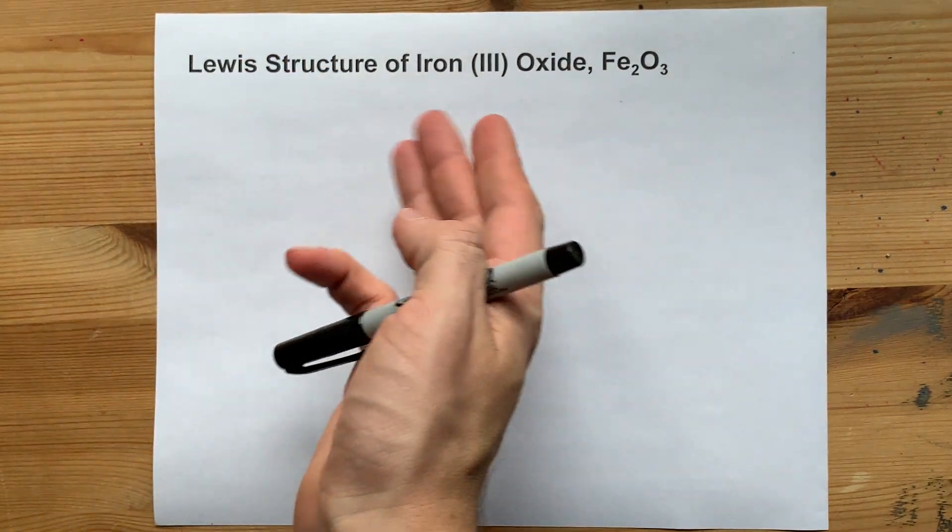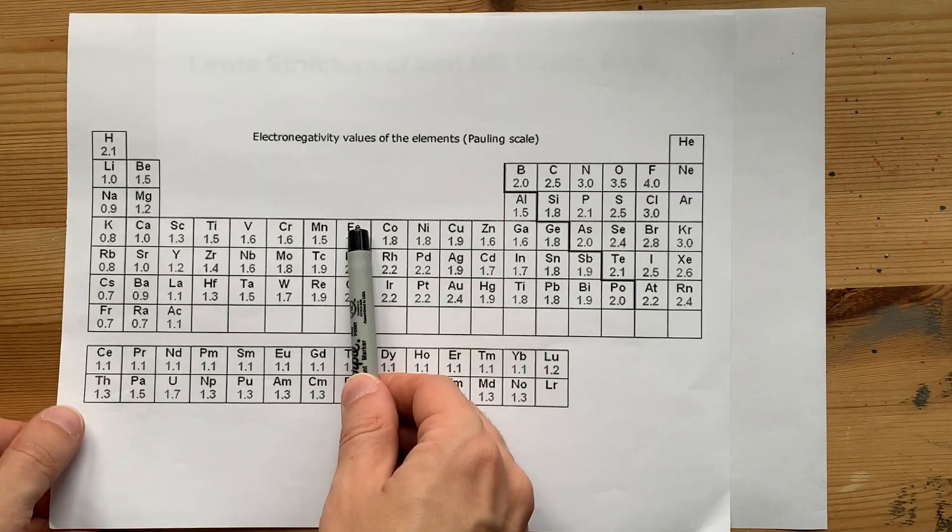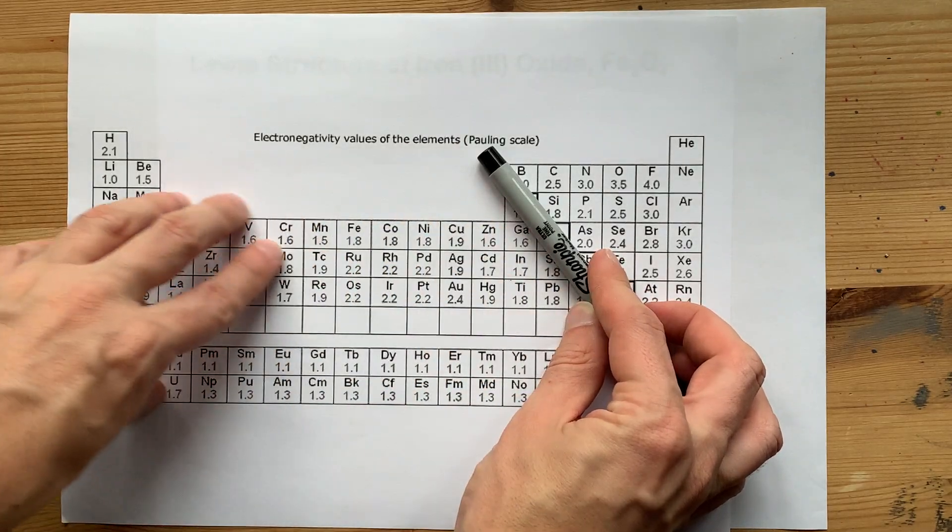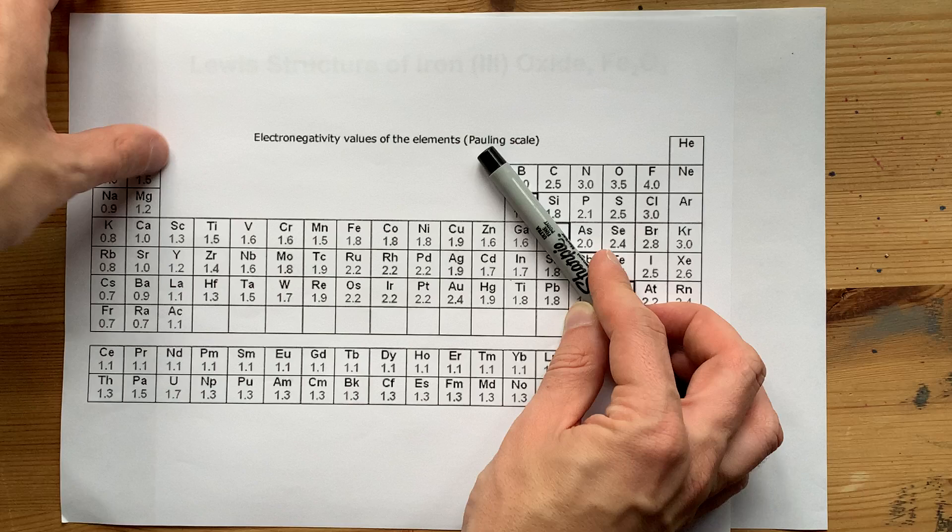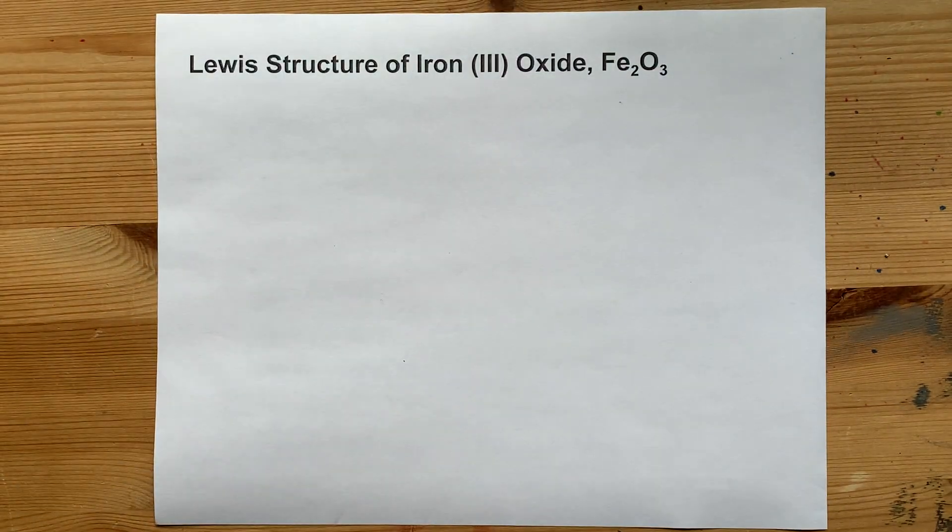The Lewis structure of iron-3-oxide has iron, a metal, from the left side of the periodic table, bonding with oxygen, a non-metal, from the right side of the periodic table.